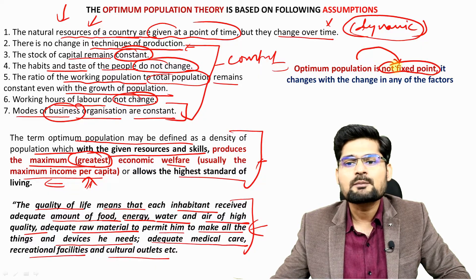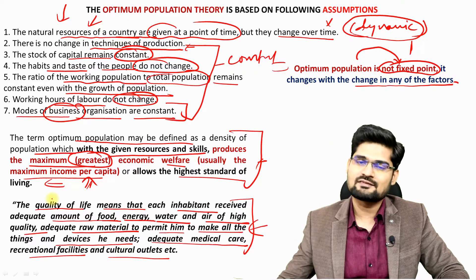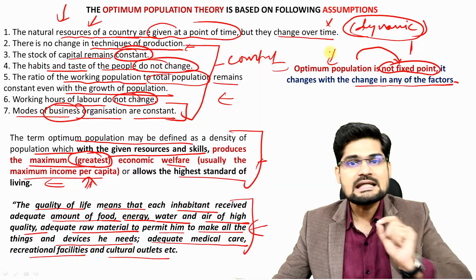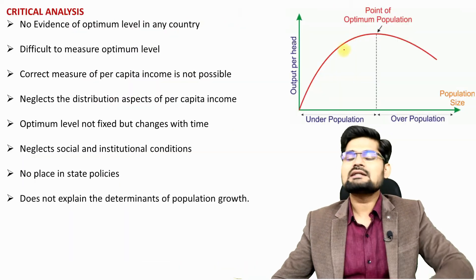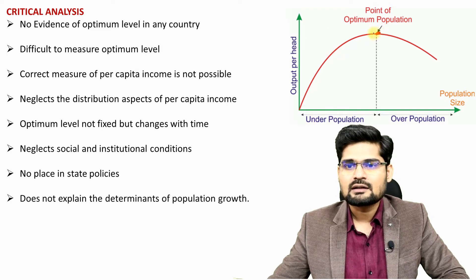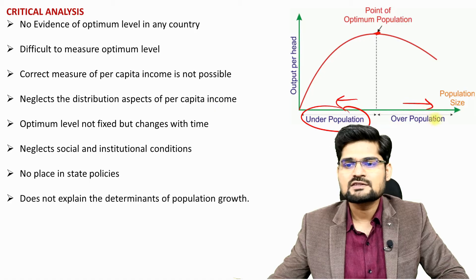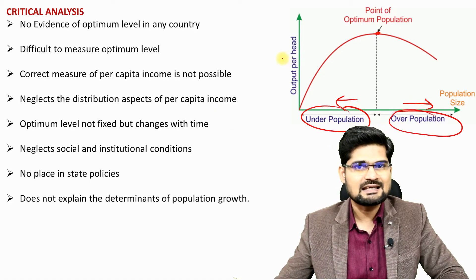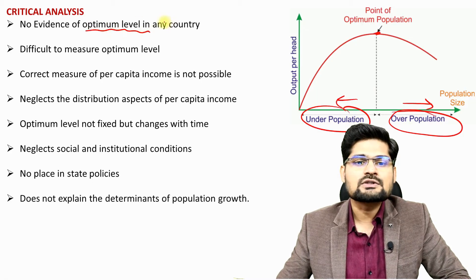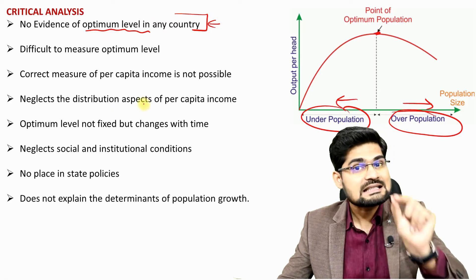One important point is that optimum population is not a fixed point — it is dynamic and changes with any change in the assumed factors. Now, regarding the critical analysis: no evidence of an optimum population level in any country has been found, it is difficult to measure exactly, and a correct measure of per capita income is problematic due to computation issues.